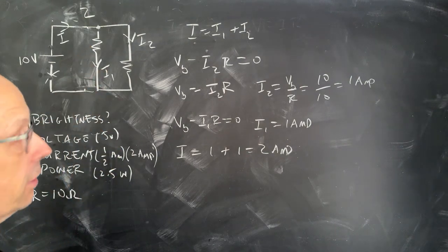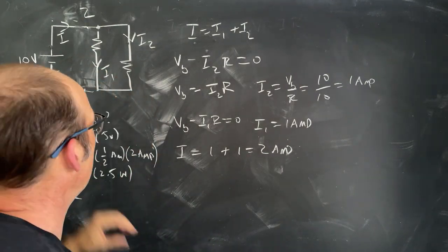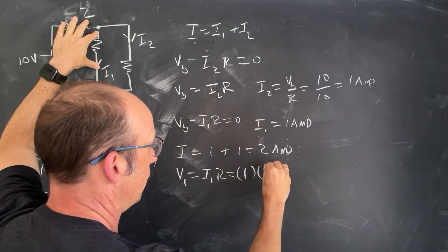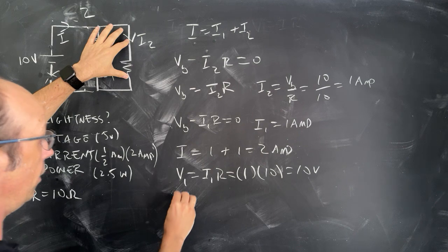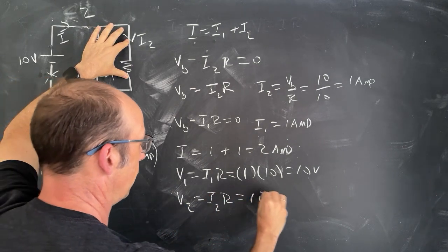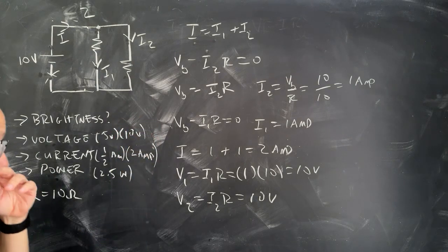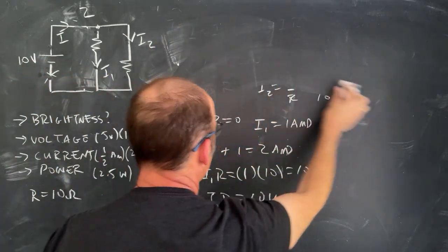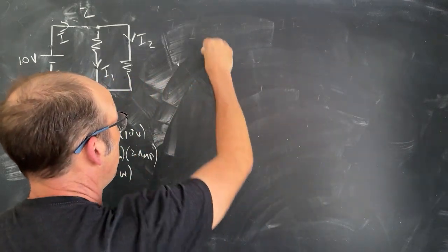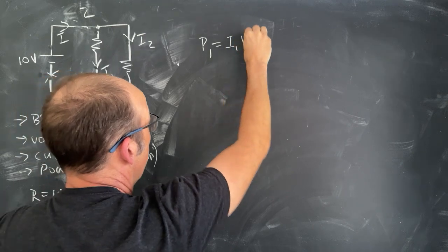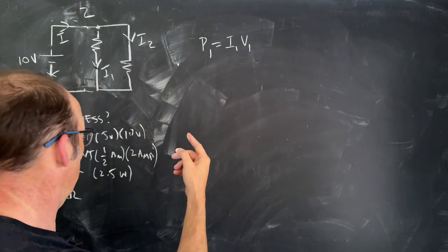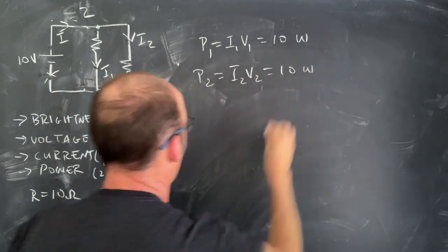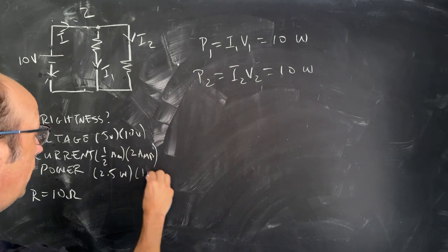Now finding the voltage across each bulb: V1 equals i1 times R equals 1 amp times 10 ohms equals 10 volts. V2 equals i2 times R equals 10 volts as well. The power for bulb 1 is P1 equals i1 times V1 equals 1 amp times 10 volts equals 10 watts.